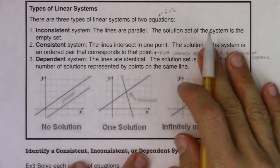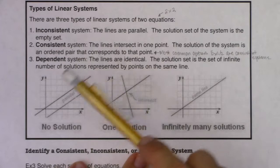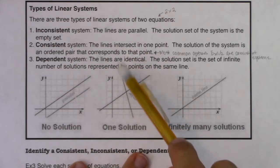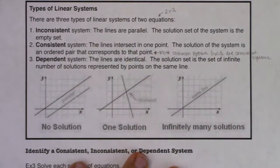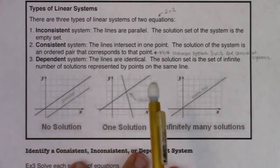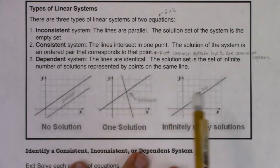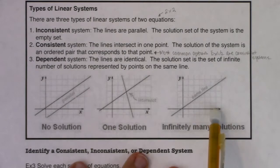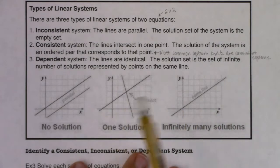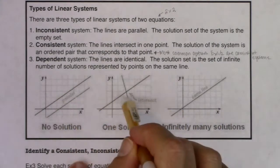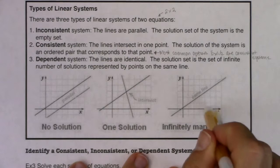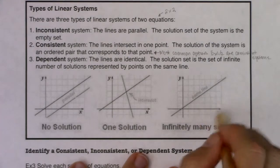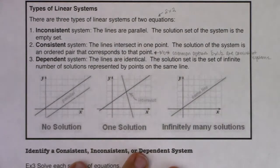So we've got inconsistent, consistent, dependent — no solution, one solution, infinitely many solutions. These two solution sets aren't too tough to write out, but the dependent case is a little more involved because you actually need to write the equation of the line. So let's go ahead and take a look at that.